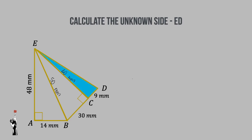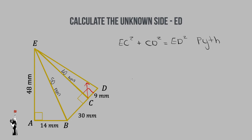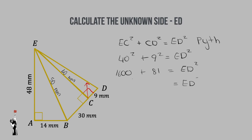Now in the third triangle we have two of three sides known and can calculate the unknown side ED. Since angle C is 90 degrees in the second triangle and angles on a straight line sum to 180 degrees, the angle in the third triangle is also 90 degrees, making ED the hypotenuse. Writing: EC squared plus CD squared equals ED squared. EC is 40 squared (1600) plus CD is 9 squared (81). Taking the square root: ED equals 41 millimeters.